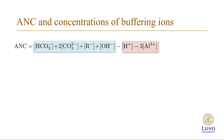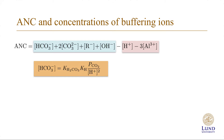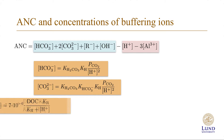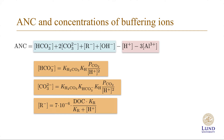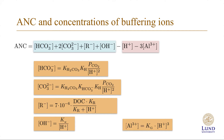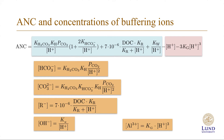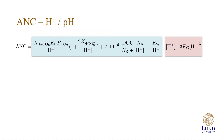We can substitute expressions for all the various anions and cations into this expression — the anions to the weak organic acids, the hydroxyl ion, and the aluminum 3+ ion. As we can see, all these ions can be calculated from constants, the parameters pCO₂ and DOC, as well as the hydrogen concentration. Now we can substitute all these expressions into the expression for ANC. With this expression, we can directly calculate the ANC from H⁺ simply by inserting relevant values into the equation.